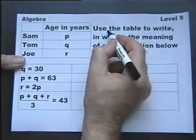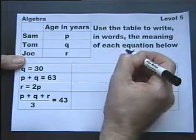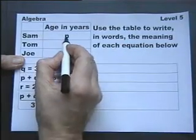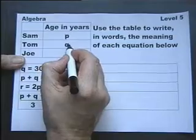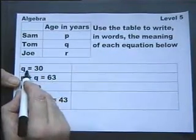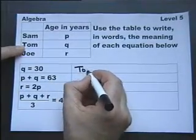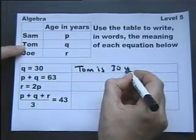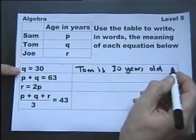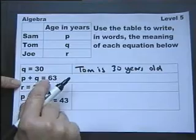Bit of algebra. Use the table to write in words the meaning of each equation below. So Sam's P years old, Tom is Q years old, and Joe is R years old. Q equals 30 is in fact saying Tom is 30 years old. So that's what they're after, rewriting the algebra into a sentence. P plus Q is 63.